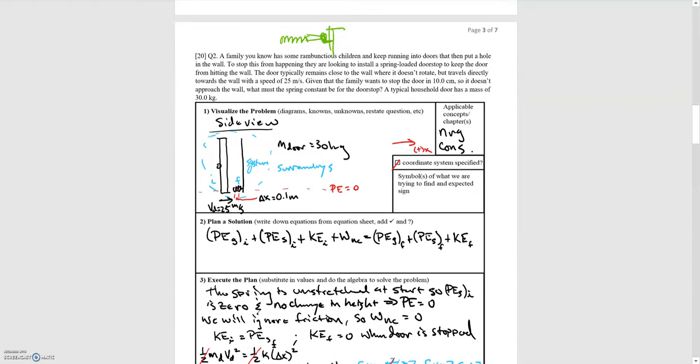So what type of problem is this? This is definitely a conservation of energy problem. So what are you going to need to do? Well, you're going to need to figure out where your initial point is and where your final point is. So I've got the initial point as being this door. The final point is the compression of the spring. I still have my coordinate system. I have a potential energy of gravitational potential energy line of zero.